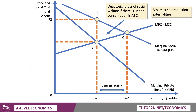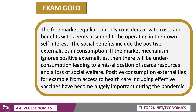There's your key diagram — you might want to take a screenshot for your revision notes. The free market equilibrium only considers private costs and benefits with agents operating under their own self-interest — of course, you can challenge that assumption as part of your evaluation. The social benefits include the positive externalities in consumption, and if the market mechanism ignores positive externalities, then there will be underconsumption, leading to that misallocation of scarce resources and a loss of social welfare. Positive externalities are very strongly linked at the moment to healthcare, including effective vaccines that became hugely important as we tried to bring ourselves out of the pandemic.